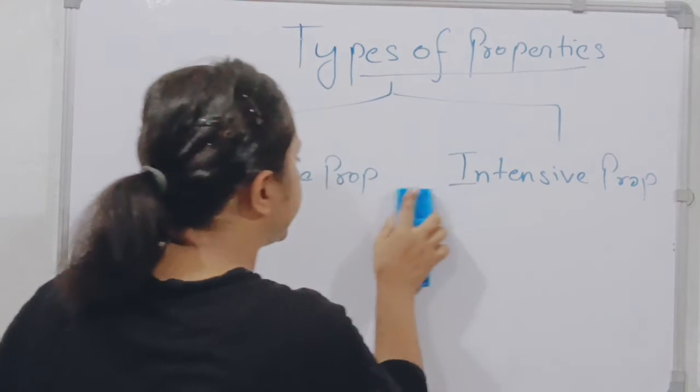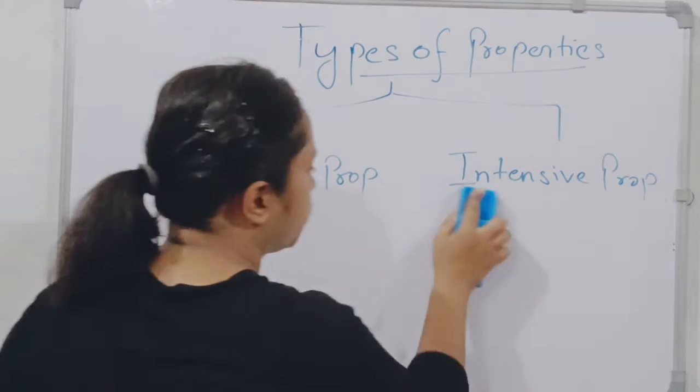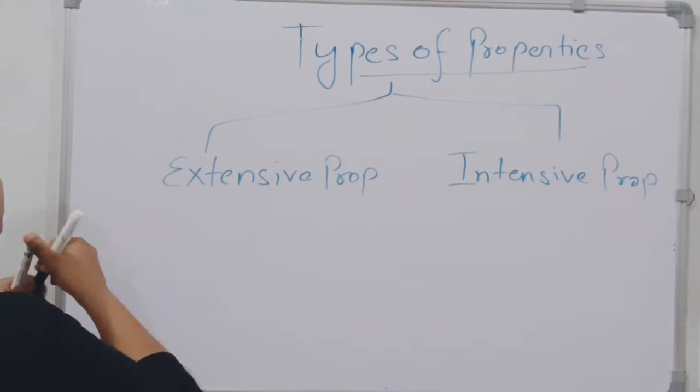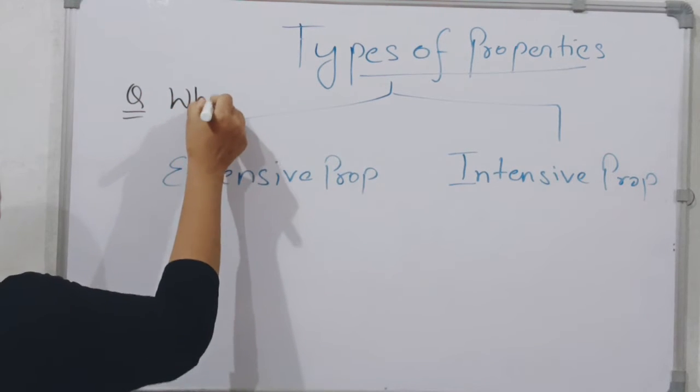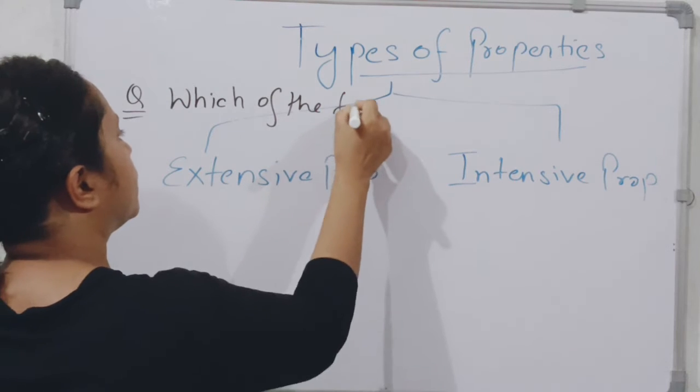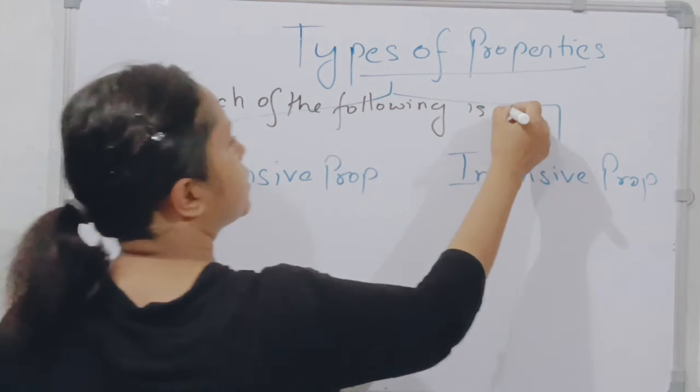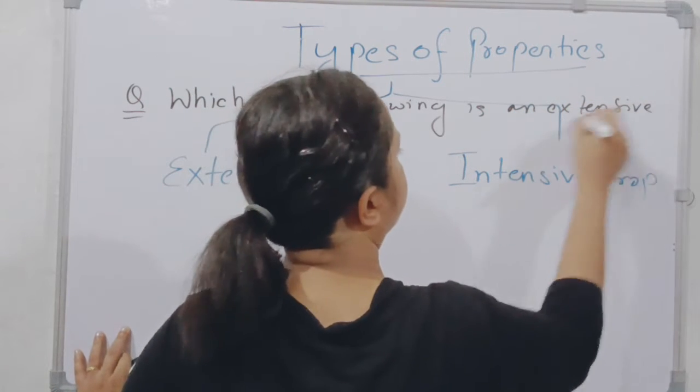Let's see some examples. Then it will be more clear because directly in the examination they ask questions: Which of the following is an extensive property?